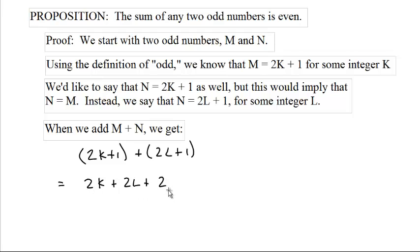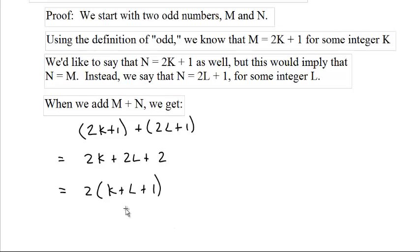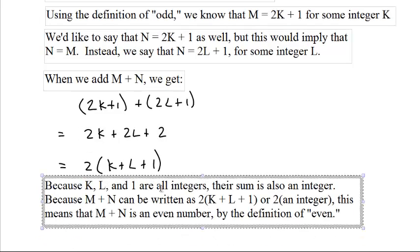And all of these things have a 2 in it. We can factor it out and get 2 times k plus l plus 1. And k, l, and 1 are all integers. K plus l plus 1 is an integer. And by the definition of even, anything that can be written as 2 times some integer is an even number.